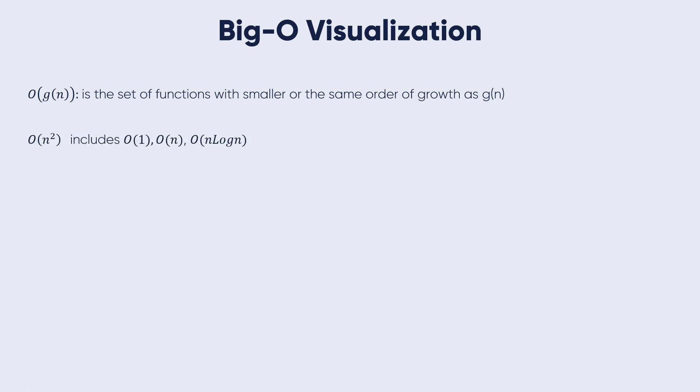For example, if we have O(n²), this means it includes O(1), O(n), O(n log n) that we have seen in the chart before.